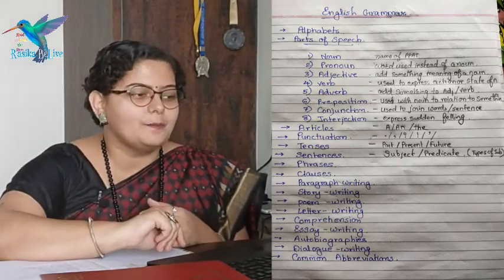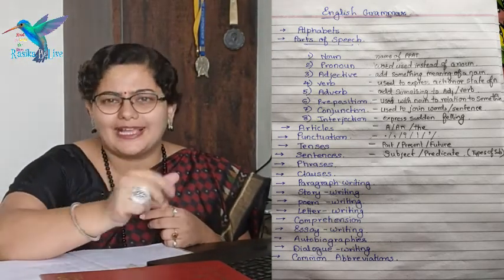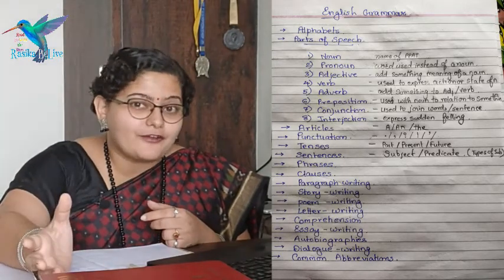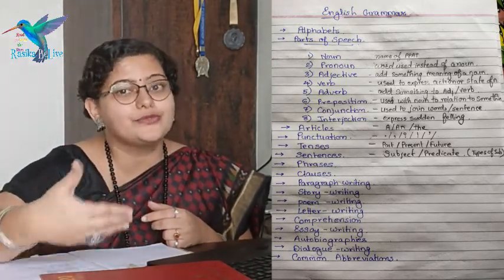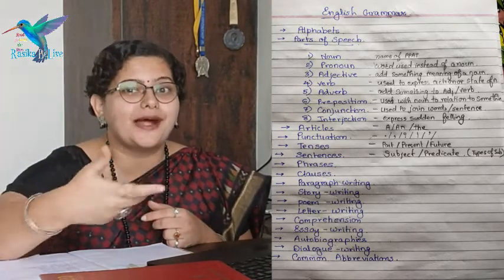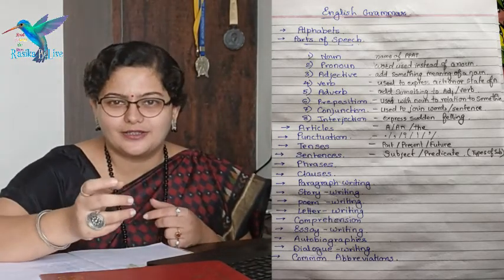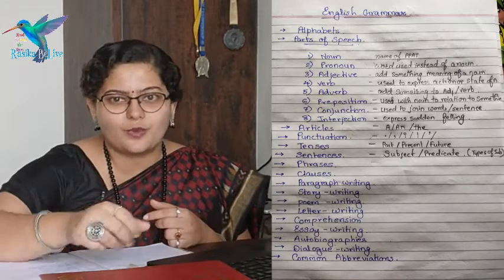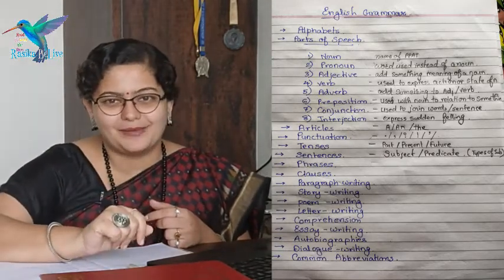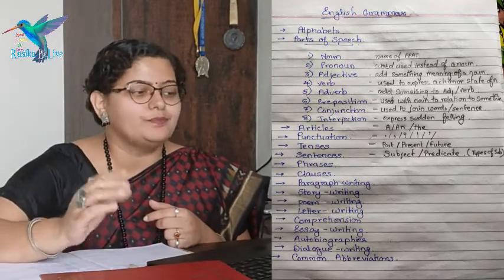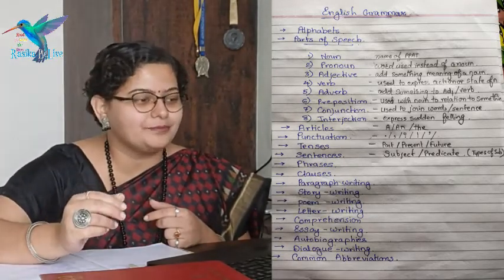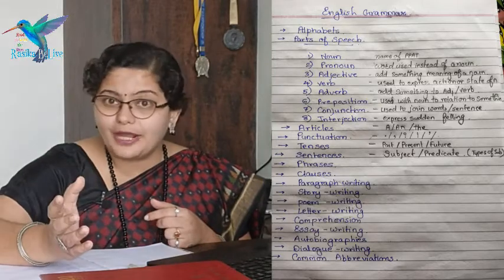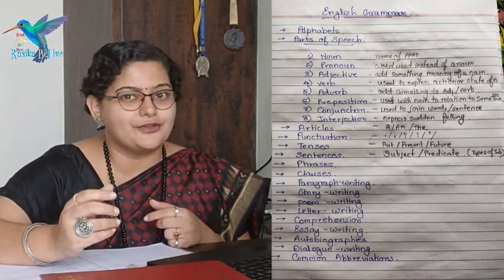Then we have phrases — particular lines which are used for particular things. Then clauses. Then we have paragraph writing. See, if you learn once how to write the sentences, you can write the paragraphs — it is also an art. So it also has rules which you have to follow. Learning those rules of paragraph writing, we are going to see in English grammar. And same, it continues with story writing, poem writing, letter writing, comprehensions, essay writing, autobiography, dialogue writing, and common abbreviations.